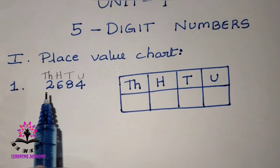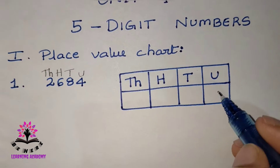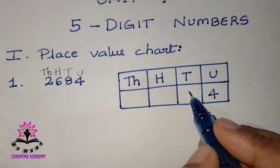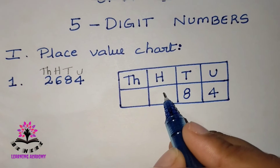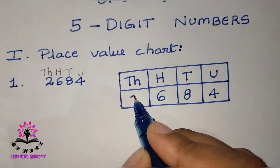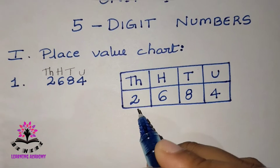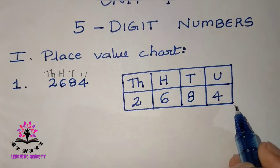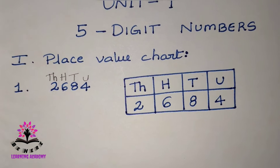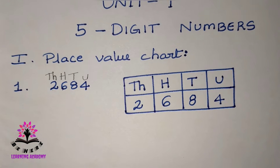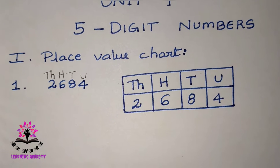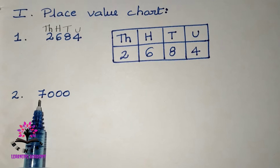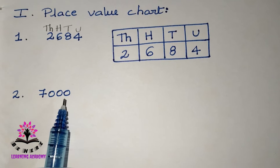Now let us write this in the place value chart. Units place is four, tens is eight, hundreds is six, thousands is two. So the number is two thousand six hundred and eighty-four. Let us move on to the next question — seven thousand something.